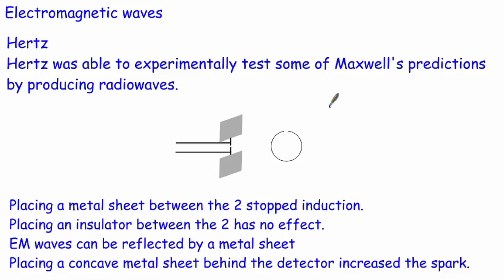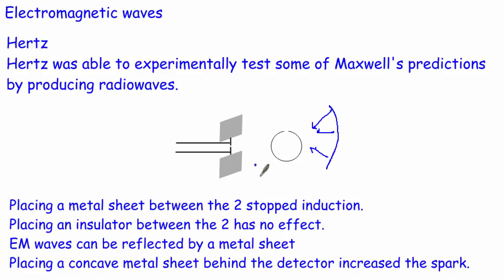He then placed a concave metal plate so that as the electromagnetic waves came along they were reflected and focused onto the detector, producing a much stronger spark. This confirmed that metal plates reflect electromagnetic waves, and a concave metal sheet can focus them — which is specifically required knowledge for the exam.